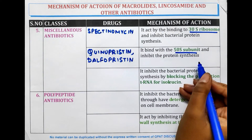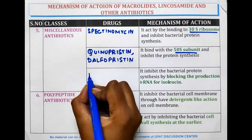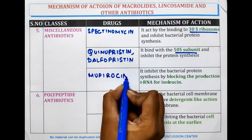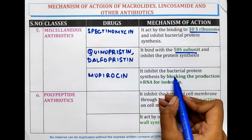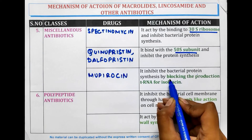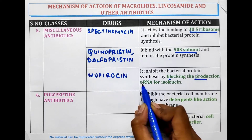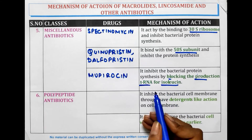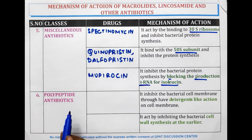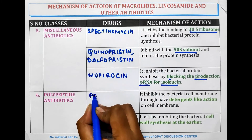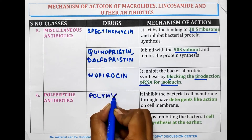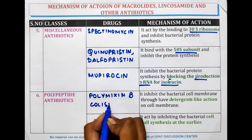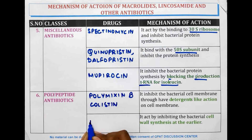The next drug is Mupirocin. Mupirocin acts by inhibiting bacterial protein synthesis by blocking the production of tRNA for the isoleucine amino acid. Next is Polypeptide antibiotics, which includes Polymyxin B, Colistin, and Bacitracin.